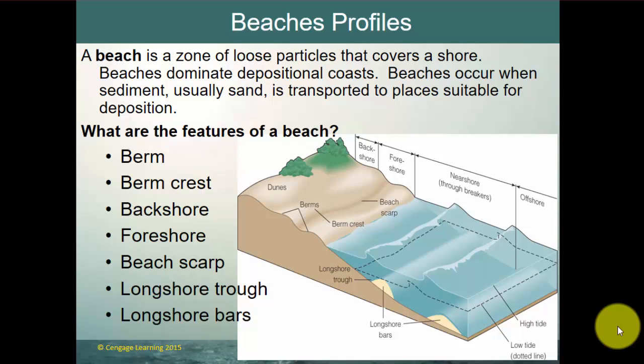A beach is a zone of loose particles that cover a shore. Beaches dominate depositional coastlines and occur when sediment — usually sand — is transported to places suitable for deposition and is able to become stable. Unique features of the beach include the berm, the berm crest, the back shore, the foreshore, the beach scarp, longshore trough, and the longshore bar.